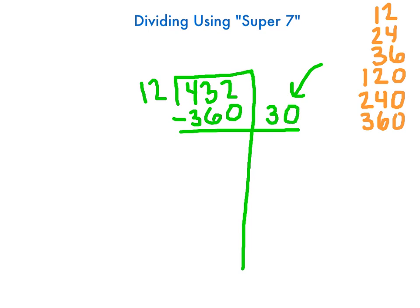Then I'm just going to subtract. 2 minus 0 is 2, 13 minus 6 is going to be 7, and 3 minus 3 is 0.